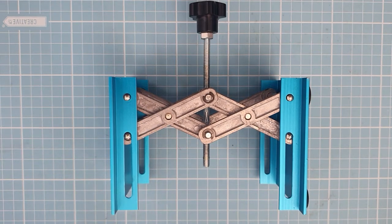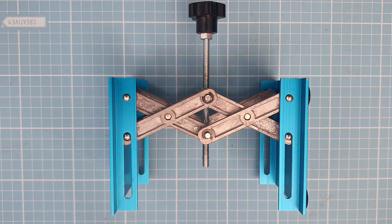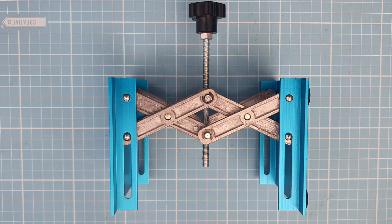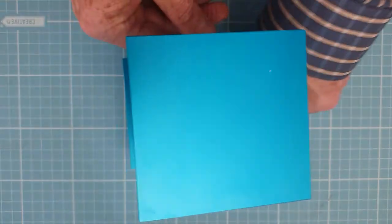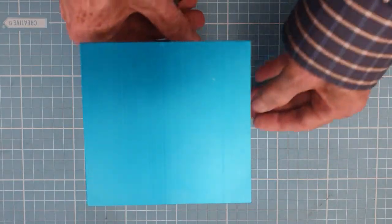This is a laboratory scissor jack I got from AliExpress, delivered to Australia for about 27 Australian dollars. Its dimensions range from 4 centimeters to 16 centimeters tall, and the platform is 10 by 10 centimeters.